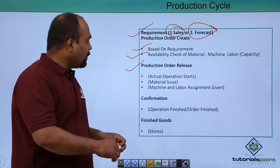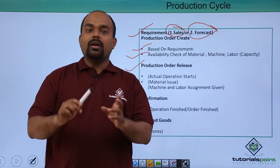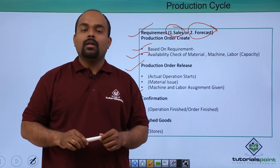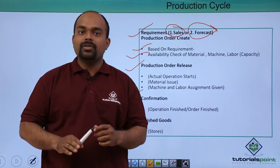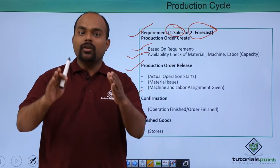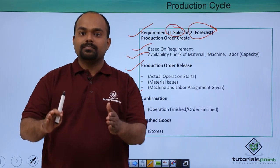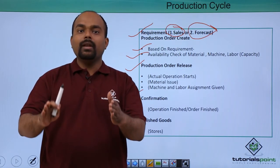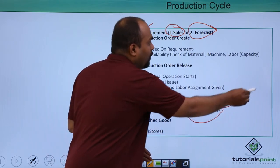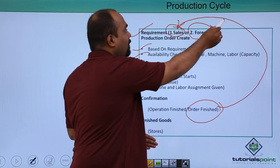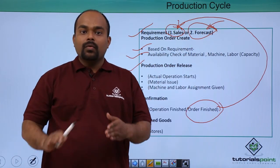The next step is confirmation. All the operations are finished — the operation on the raw material is complete, and the raw material has been converted into the finished product, fulfilling the order made by sales or by forecasting.